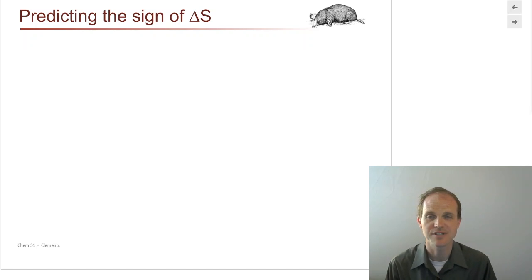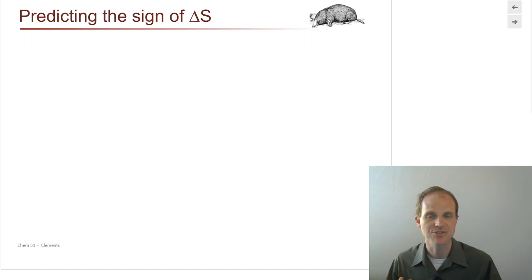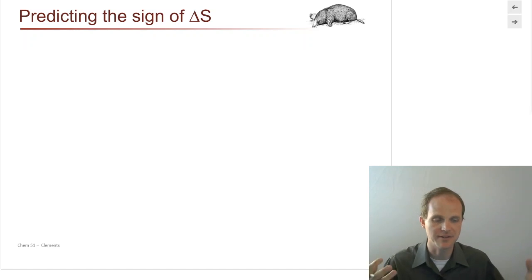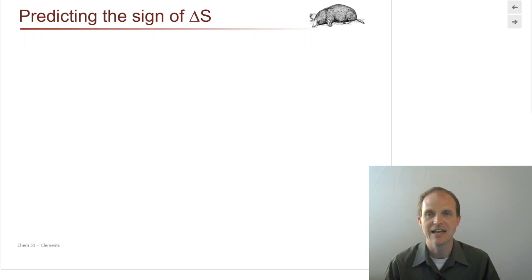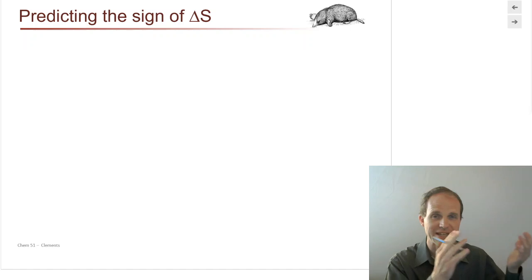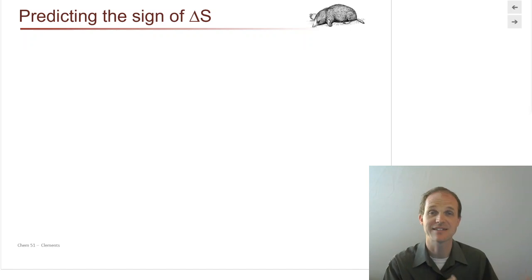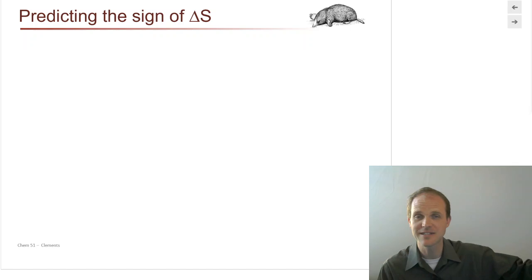Hello and welcome back. We're still continuing to talk about entropy. We've talked about how to calculate entropy changes in the surroundings, and we've talked a little bit about the fact that entropy is the sole predictor of spontaneity. But we haven't done anything useful yet, and so we're working our way up to how do we know if a reaction is going to happen or not. That's the useful predictor, and it's still a ways away.